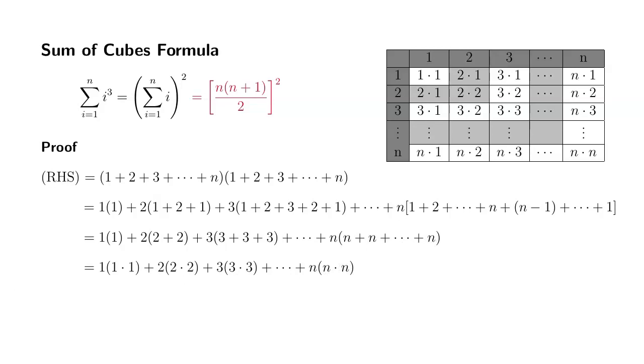Therefore, we get exactly what we want. First term gives you 1 cubed. Second term, you have three 2s, so 2 cubed, and then you get 3 cubed, and so on. The last term is n cubed, which is exactly the same thing as the left-hand side.